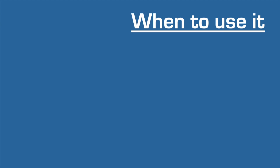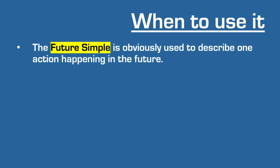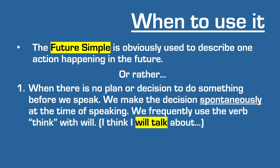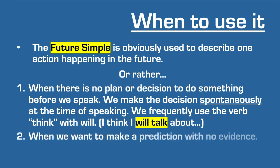So most importantly, when to use it? The future simple is used to describe one action happening in the future. Number one: when there is no plan or decision to do something before we speak — we make the decision spontaneously at the time of speaking, and we frequently use the verb think with will. Number two is prediction. And number three for invitations. So let's break it down and look at the three points with their examples.